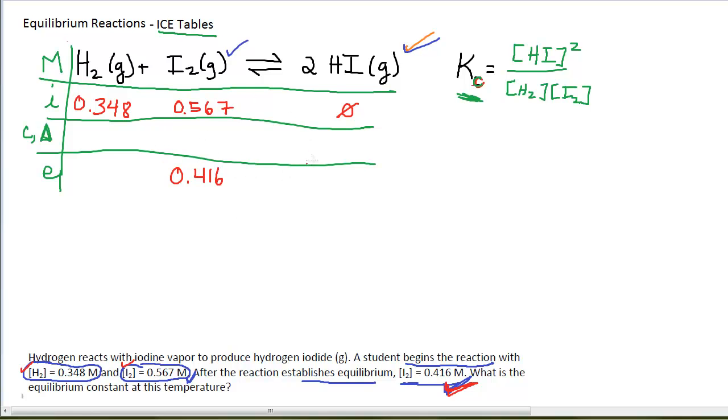As this reaction proceeds, I use up some of my I2 and I produce some HI. But once I use up my I2, I am only left over with 0.416. So the change, the change in I2 is the difference between these two numerical values. The change is 0.567 minus 0.416. So this reaction consumed 0.151 molarity, moles per liter. This is moles per liter.